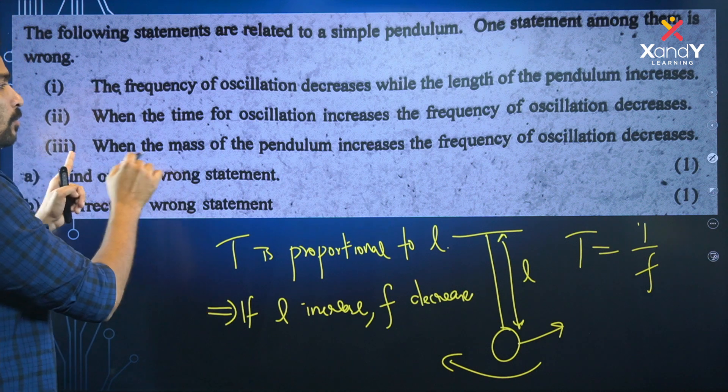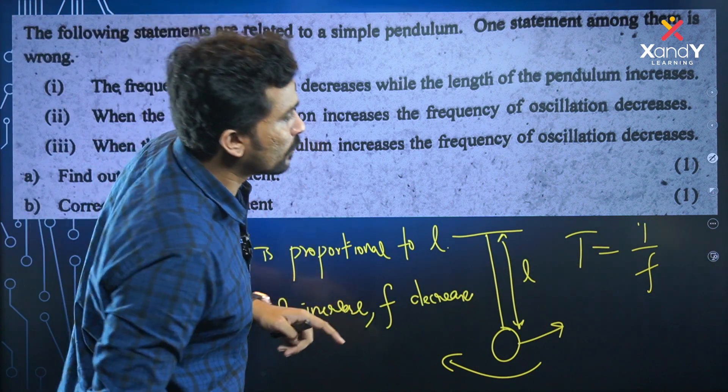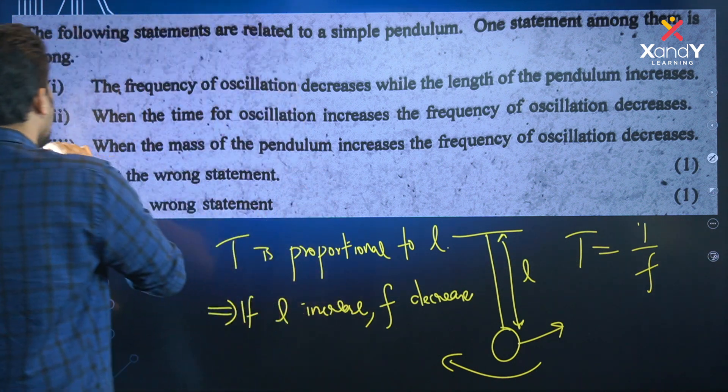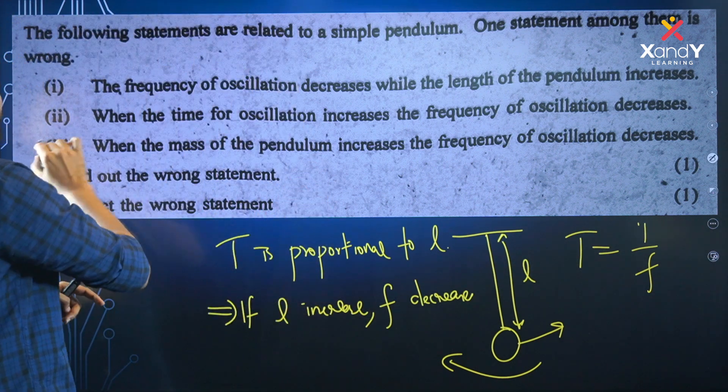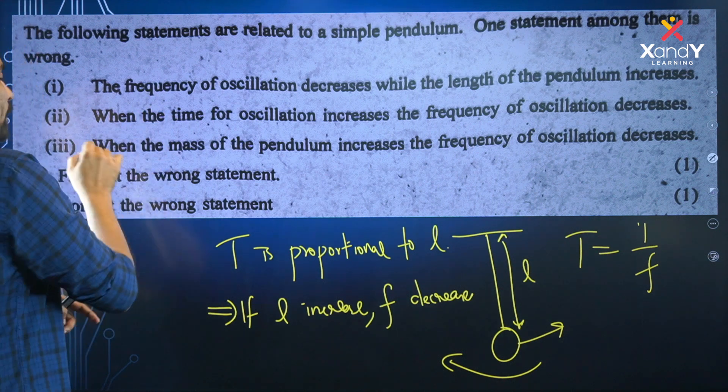The third statement is: when the mass of the pendulum increases, the frequency of oscillation decreases. That is the incorrect sentence.